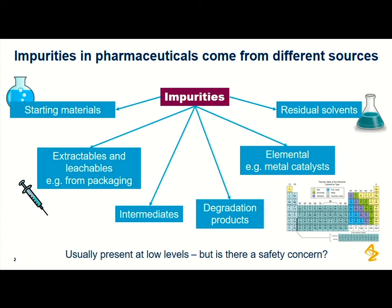Impurities in pharmaceuticals come from all different types of sources: starting materials, packaging leachables, intermediates, degradation products over time, metal catalysts used in the synthetic process, and residual solvents. These impurities are always going to be there and we're always going to have to manage them, though they're present at low levels.